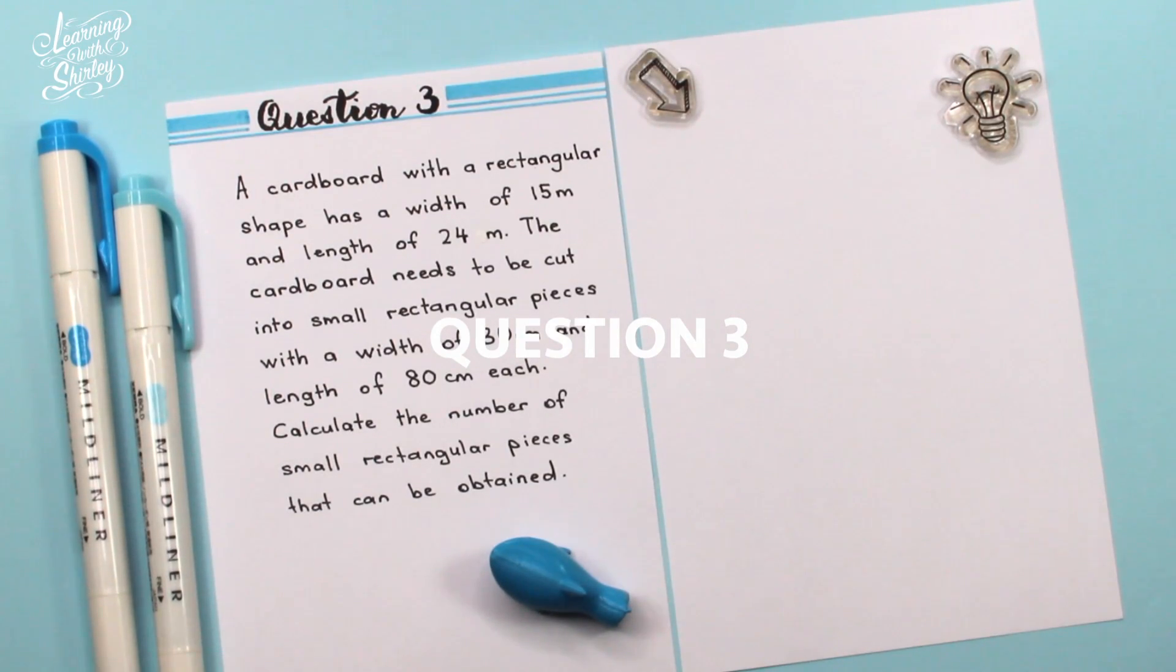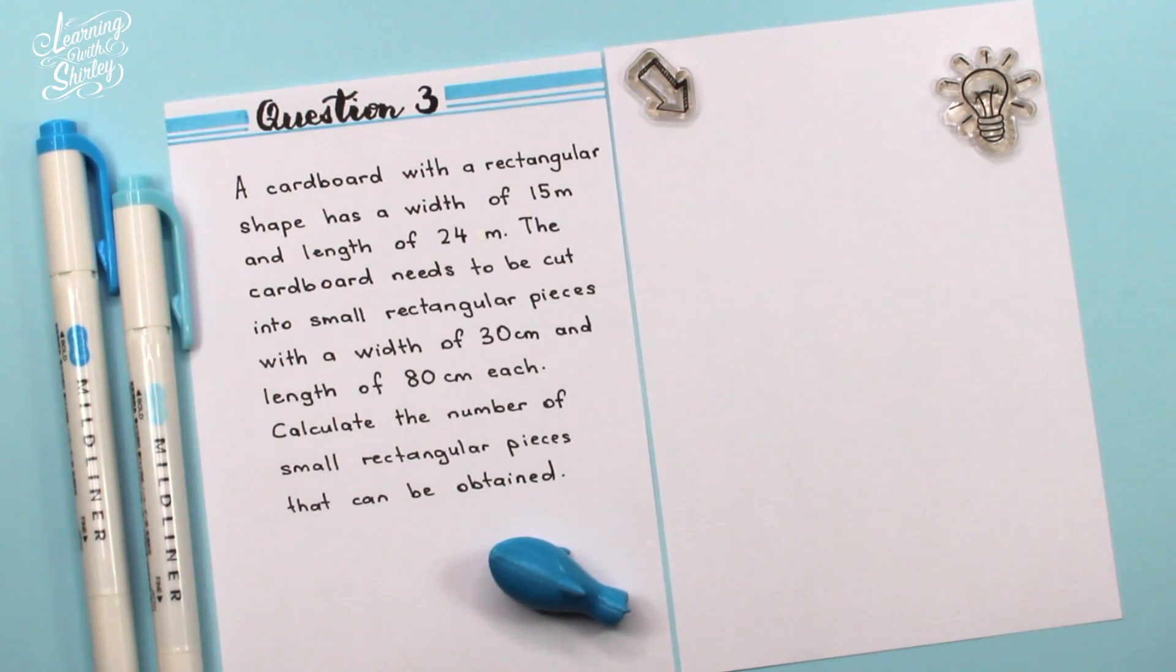For question number 3, a cardboard with a rectangular shape has a width of 15 meters and the length of 24 meters. The cardboard needs to be cut into small rectangular pieces with a width of 30 cm and length of 80 cm each. Calculate the number of small rectangular pieces that can be obtained.